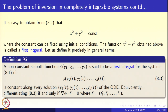What is the value of the constant? The initial conditions are given: x(0) and y(0) are given, so the constant can be evaluated. The function x² + y² obtained above is constant along solutions, and such a thing is called a first integral. A non-constant smooth function φ(y1, y2, ..., yn) is said to be a first integral for the system of ODEs 8.1 if the function is constant along the trajectories.